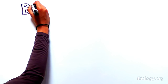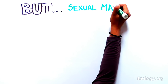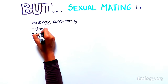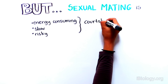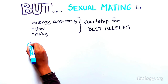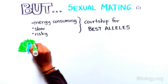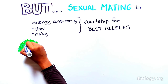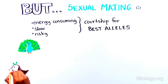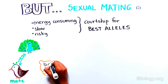While genetic diversity arising from sexual reproduction has been critical for the survival of many species, mating is an energy-consuming, slow, and risky process. To improve the chance of selecting the best partner and therefore the best alleles, some species have evolved highly sophisticated courtship behaviors. Male peacocks, for example, grow long iridescent tail feathers and perform an elaborate dance to attract a mate, but this process requires energy and can attract predators.